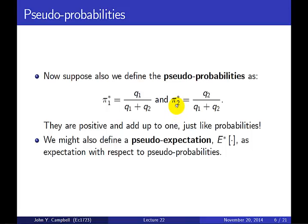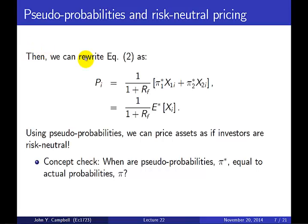So these pi-stars have all the proper properties of probabilities. They're not the objective literal probabilities of the states, but they're numbers that can be treated as if they were probabilities. We can define a pseudo expectation E-star as a pseudo-probability-weighted average of the payoffs. The pricing equation then becomes 1 over (1 plus rf) times the pseudo expectation E-star of xi — we're discounting at the riskless rate whatever the pseudo expected payoff is.